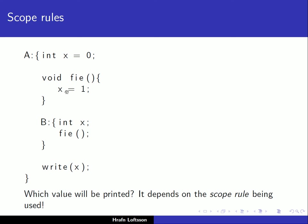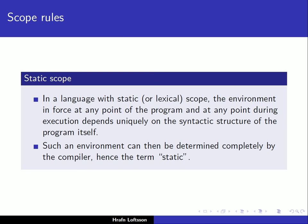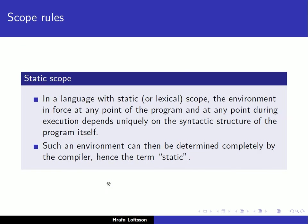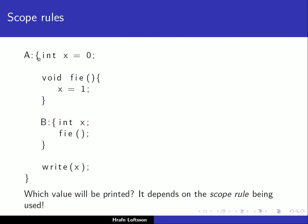If the name is not found in the closely nested enclosing block, we search in the next outer block. This search continues from the nearest block to the furthest. If the outermost block is reached and contains no association for the name, the association must be looked up in the language's predefined environment. If no association exists there, there is an error. So if X is not declared in A, it might be declared in the block enclosing A; if not found, it could be a predefined variable; otherwise, we get a compile-time error.